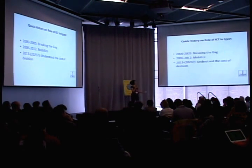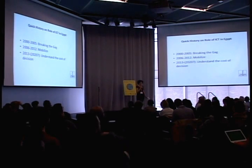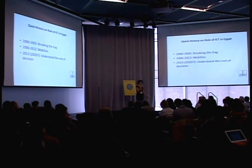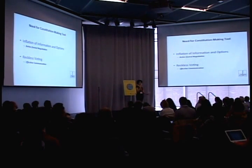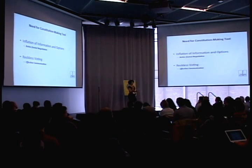To give you a quick history on the role of ICT in Egypt: it has been used from 2000 to 2005 to break the gag on political activism, and from around 2006 it helped people mobilize. But now it's time to make informed decisions and understand the cost of decision-making.